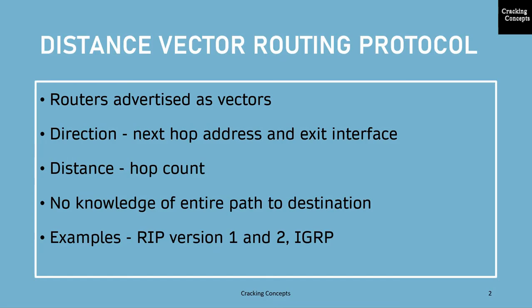Distance vector means the routers are advertised as vectors of distance and direction. Direction is represented by the next hop address and exit interface, whereas distance uses metrics such as hop count.